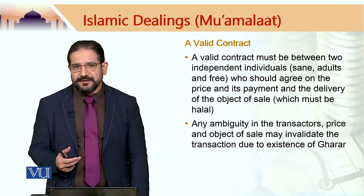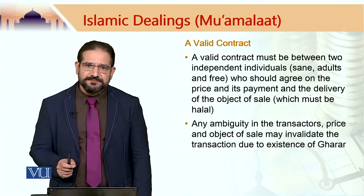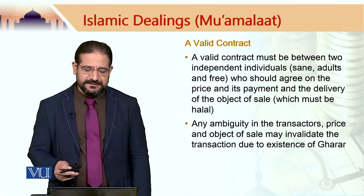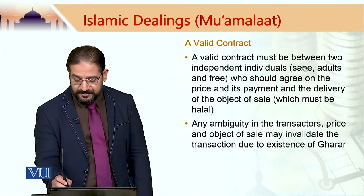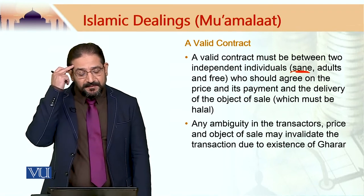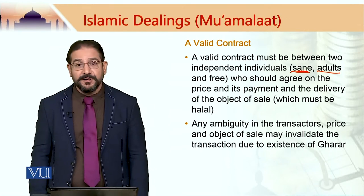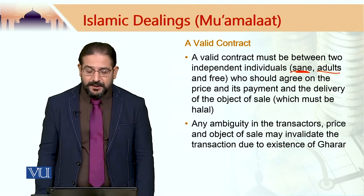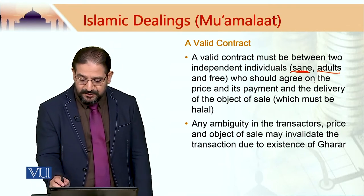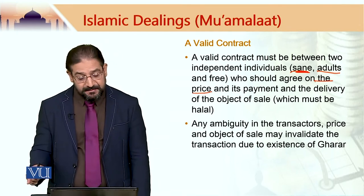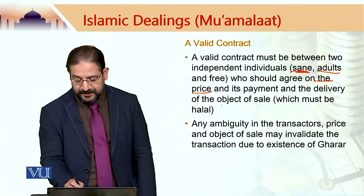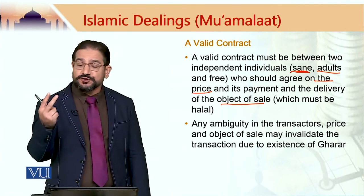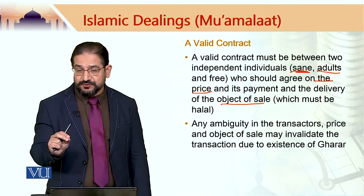A valid contract must be between two parties, and there are some characteristics of these transacting parties. These parties must have a sound mind; they should be adults if they happen to be human beings, or they should be recognized legal persons if they happen to be companies. These transacting parties should agree on the price, its payment, and the delivery of the object of sale, which must be halal.